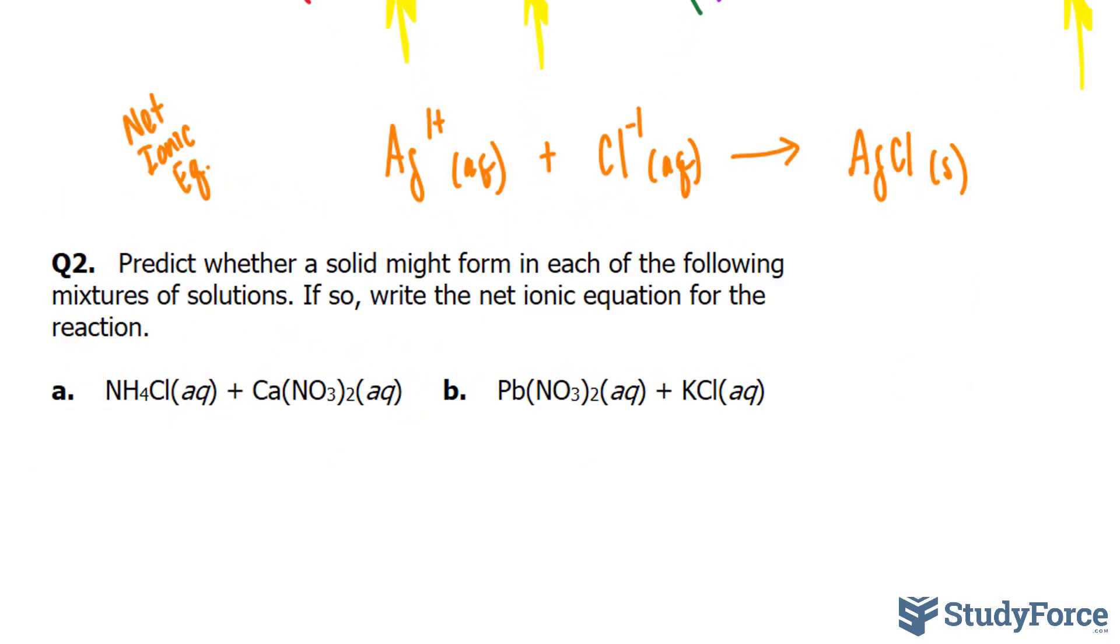Let's move on to question two. Predict whether a solid might form in each of the following mixtures of solutions. If so, write the net ionic equation for the reaction. When ammonium chloride and calcium nitrate come together, they will dissolve, but they won't form a solid. So we can't write a net ionic equation here. The products are calcium chloride and ammonium nitrate.